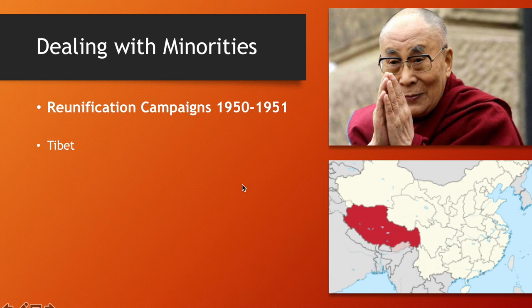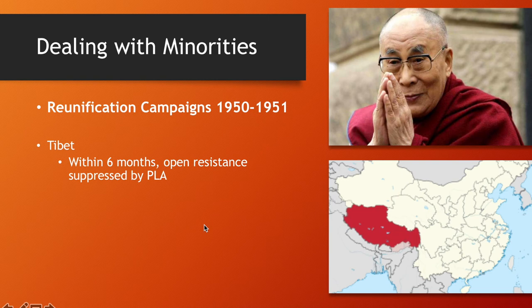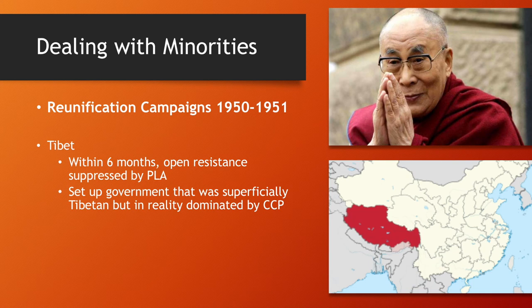In Tibet, Mao and the communists claimed Tibet had always been part of China, giving them the right to reclaim it for the communist homeland. A PLA army was dispatched and within six months open resistance was suppressed. A puppet government was set up with control directly from Beijing, and a 17-point agreement set out these terms.